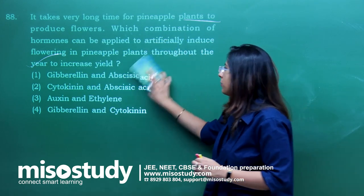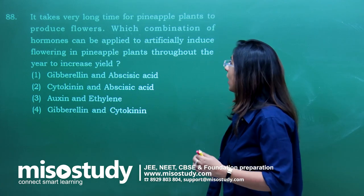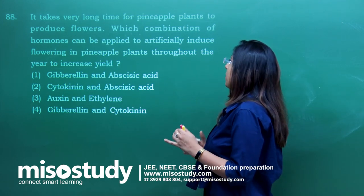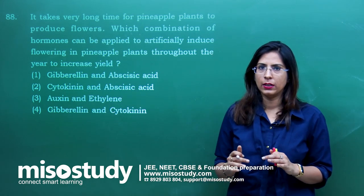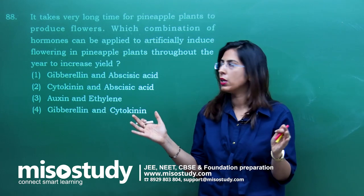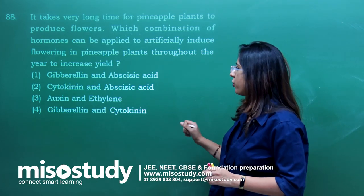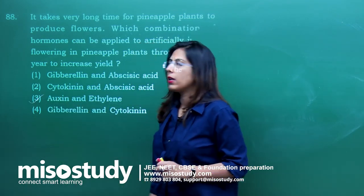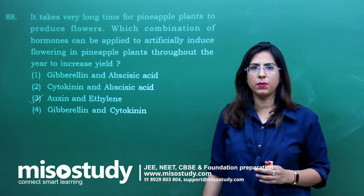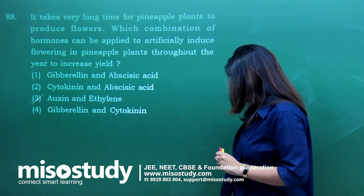Question number 88 — pineapple plants take very long to produce flowers. Which combination of hormones can be applied artificially to induce flowering throughout the year to increase yield? This is a direct question from the chapter plant growth and development. The correct answer is option 3 — auxin and gibberellin. Specifically, application of NAA (naphthalene acetic acid) and ethylene leads to flowering.